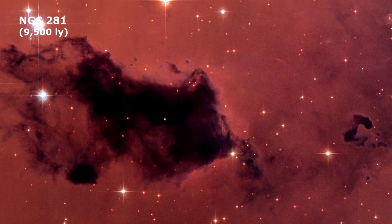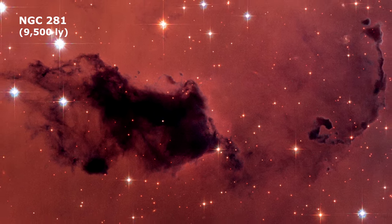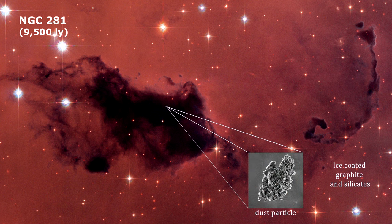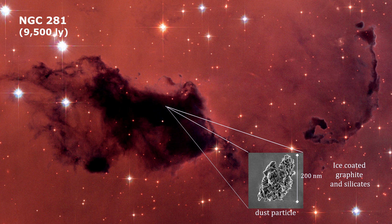The dust is made of thin, highly flattened flakes of graphite and silicate — that's carbon and rock-like minerals — coated with water ice. Each dust flake is roughly the size of the wavelength of blue light, or smaller. The dust is probably formed in the cool outer layers of red giant stars, and dispersed in the red giant winds and planetary nebulae.